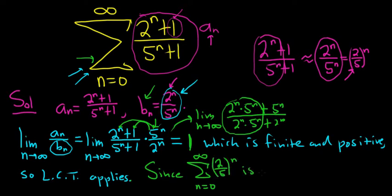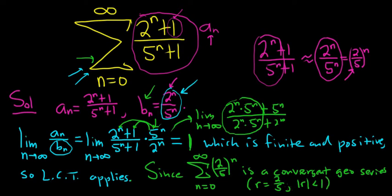Since the sum of b_n is a convergent geometric series. And it's good to explain why. Here r is equal to 2 fifths. And the absolute value of r is less than 1. That means it converges by the geometric series test.